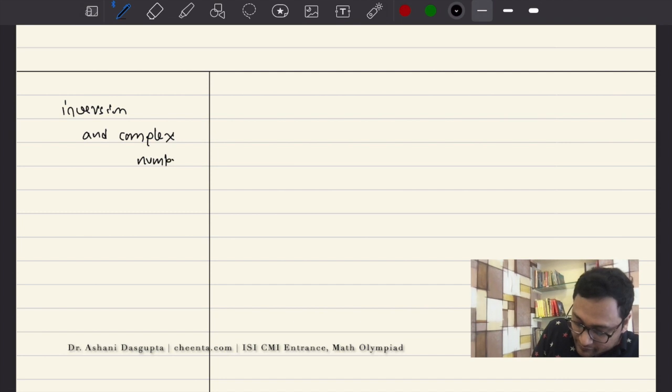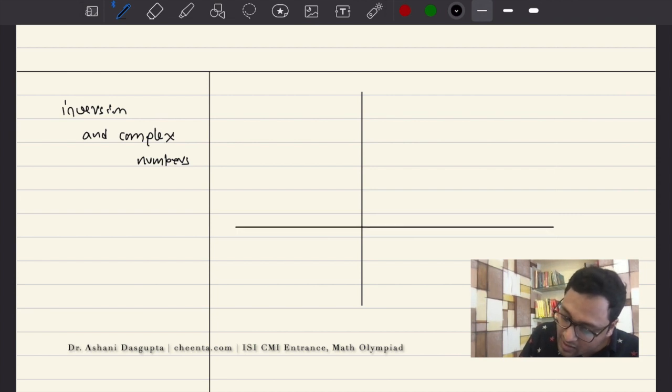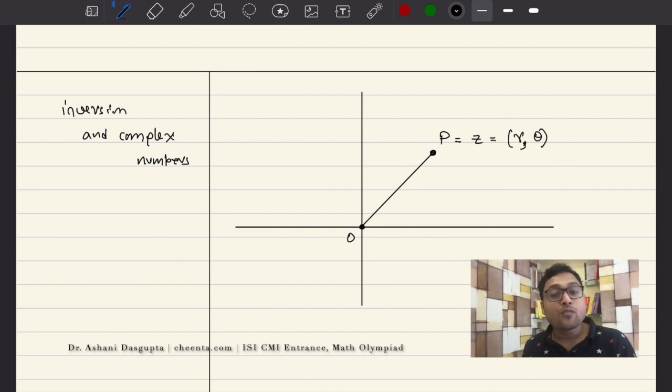So, let's finally go into that. Inversion and complex numbers. So, what I'm going to do is, I will be describing the inverse image of a point, the inverse image of a point in terms of complex numbers. So, suppose we have this complex number P, which is suppose Z equal to (R, theta). I want to find out the inverse image of P.